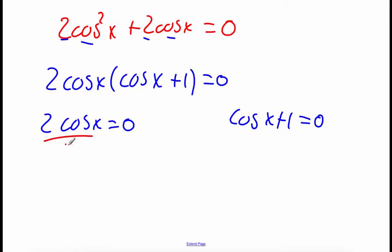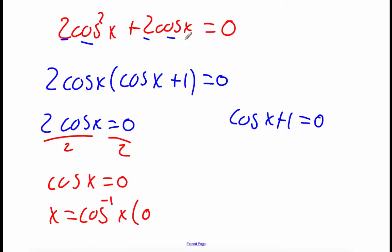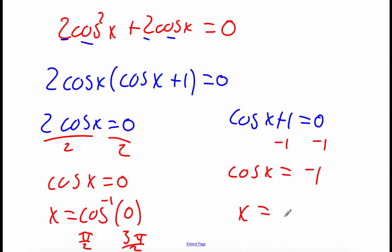On this first factor, we divide the 2 over to the right-hand side, so cosine of x equals 0. Rewriting that as an inverse, where the cosine value is 0 between 0 and 2 pi, that happens at pi over 2 and also at 3 pi over 2. For our other factor, we subtract the 1 over, so cosine of x equals negative 1. Rewriting that as an inverse and checking the unit circle, a cosine value of negative 1 happens at the angle pi.